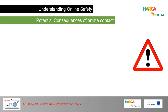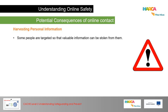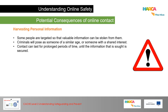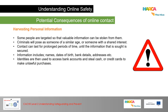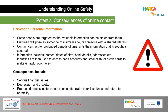Potential consequences of online contact include the harvesting of personal information. Some people are targeted so that valuable information can be stolen. Criminals pose as someone of a similar age or shared interest, and contact can last for prolonged periods until the information sought is secured. Information includes names, dates of birth, bank details and addresses. Identities are then used to access bank accounts and steal cash or use credit cards to make unlawful purchases. Consequences include serious financial issues, depression and anxiety, and a protracted process to cancel bank cards, claim back lost funds and return to normality.